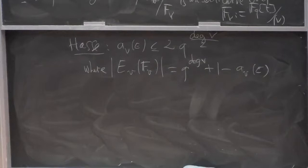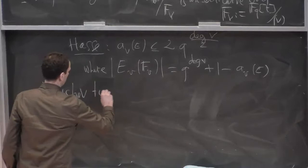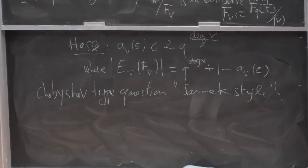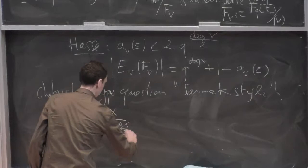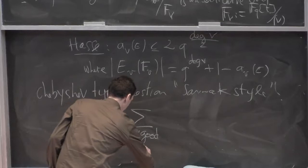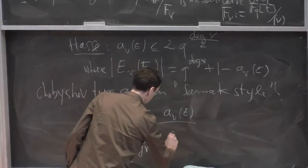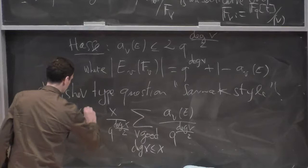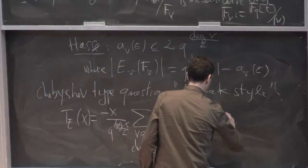And so Chebyshev type question. Let's say Sarnak style would be look at x over q to the degree of x over 2, sum over v good, of degree v less than x, a_v over q to the degree v over 2. So what's the sign of this? Let's call this t(x). Probably there's a minus sign again. Sign of t.